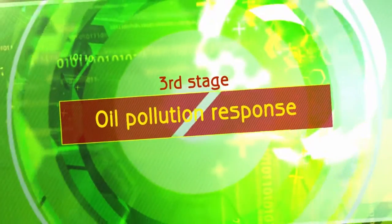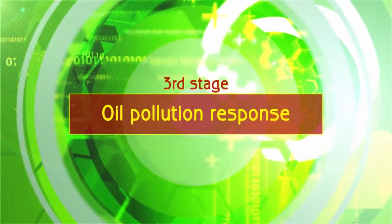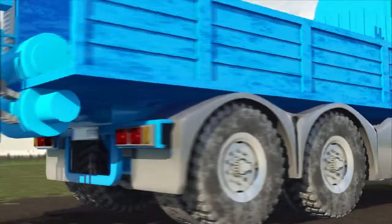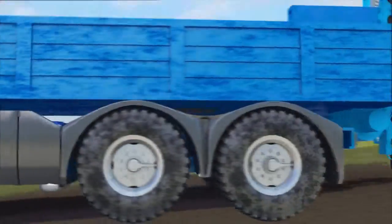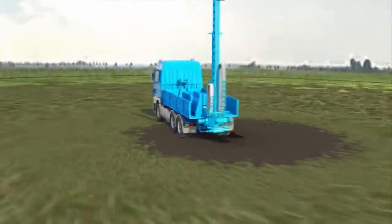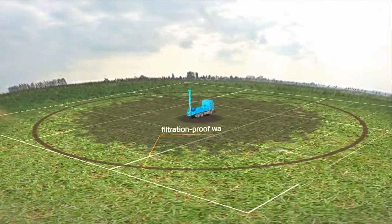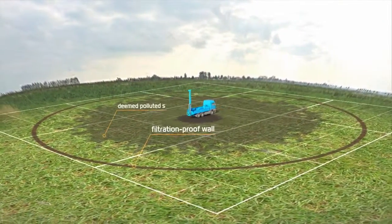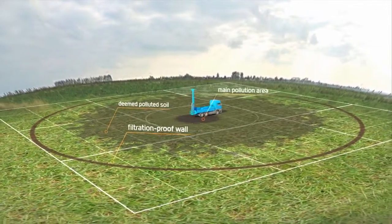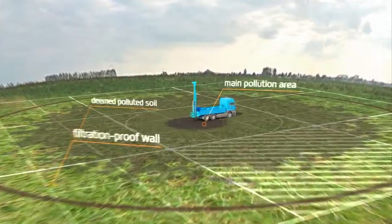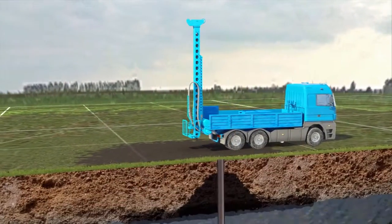The third stage is oil pollution response. The polluted area of more than 0.1 hectares is divided into several plots. There are three types of wells to be drilled within each separate plot.